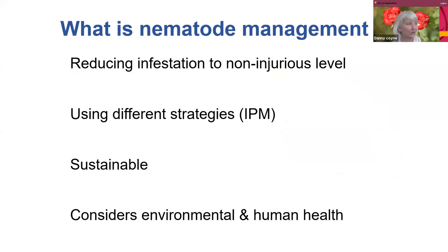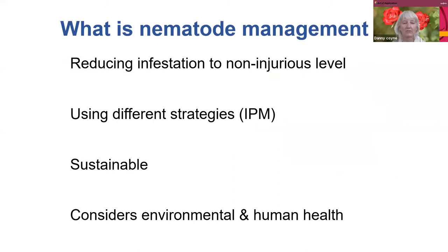Once you see you've got a nematode problem, you've got to manage them. As with any crop pest, you've got to reduce your infestation to a non-injurious level using different strategies. So IPM — be sustainable so that the management strategy lasts — and of course consider the environment and human health.